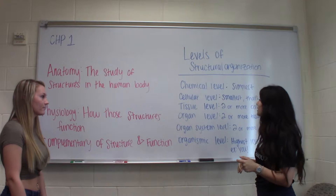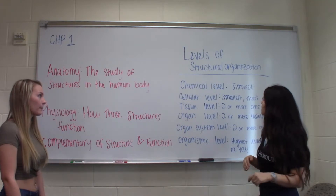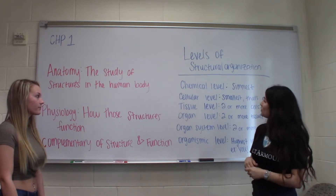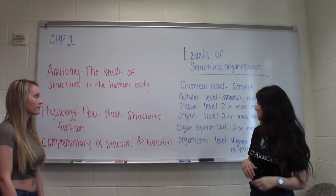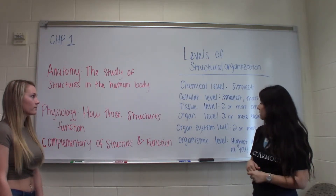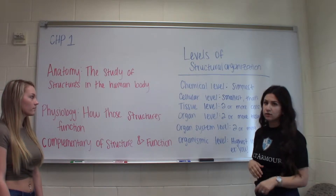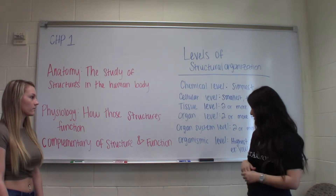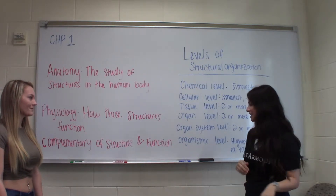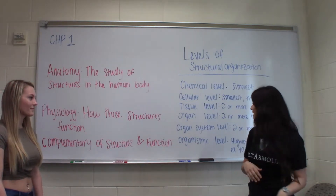There are levels of structural organization: the chemical level, cellular level, tissue level, organ level, organ system level, and organismic level.